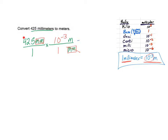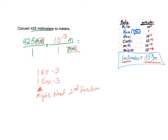On our calculator, we're going to put 425 on the top, divide that by 1, multiply that by 10 to the negative 3 — using the exponent key, so it might be 1 EE negative 3 or 1 exponent negative 3 — and then divide all that by 1. The answer you'll see is 425 times 10 to the negative 3 with the units of meter. But that's not correct scientific notation, so we move the decimal back 2 places: our answer is 4.25 times 10 to the negative 1 meters.